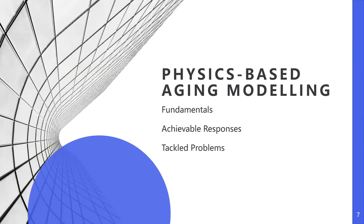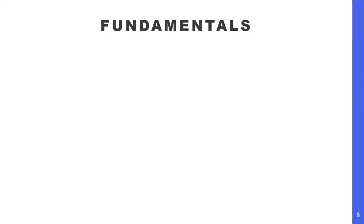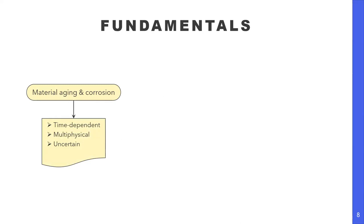Now let's look at the first part: physics-based aging modeling. I will introduce the fundamentals first, then move on to what this approach can achieve and what I have achieved in the past few years of research. Combining aging and corrosion together, as they are inseparable issues for most engineering practices, it is obvious that the whole process is time dependent. Moreover, it is a multi-physical and uncertain process — quite complex if you really want to simulate the whole thing.